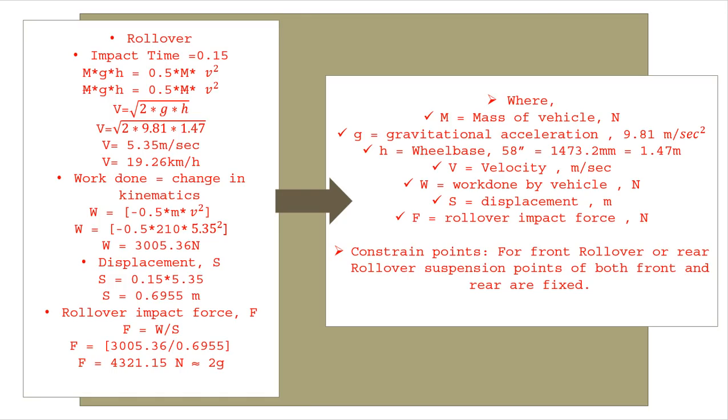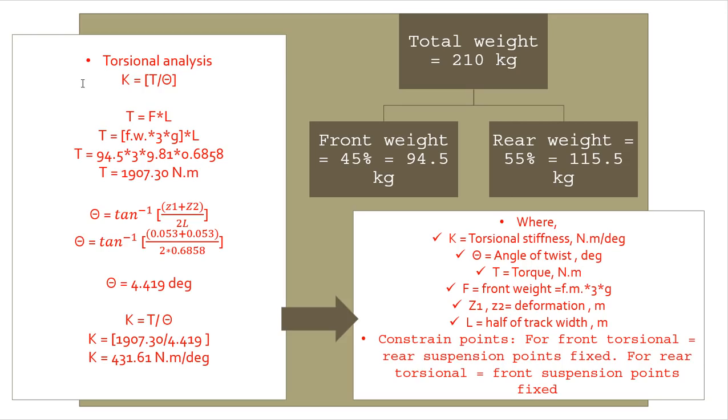After this, torsional analysis. For torsional analysis we will consider K equals torque upon angle of twist. For torque, we consider force times track width, half of the track width. This is how our weight distribution is concerned for our vehicle: for front it's 45 percent, for rear it's 55 percent. When doing torsional analysis of front, you will consider 45 percent of your weight.